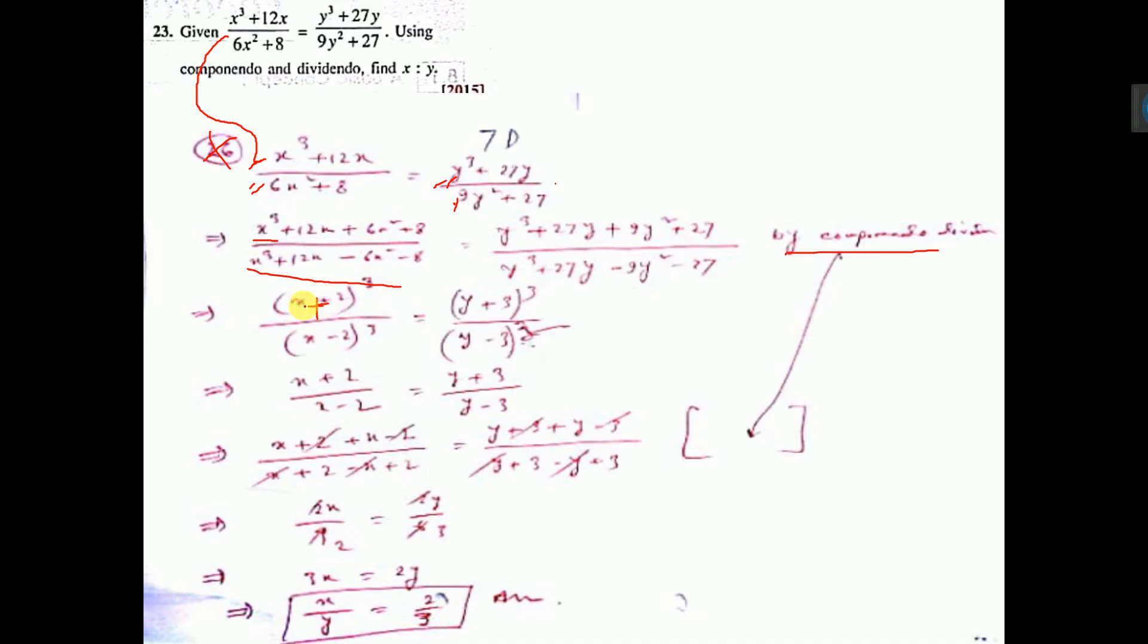If you break down a plus b whole cube: a cube plus 3 a square b plus 3 a b square plus b cube, then you will get this one. Similarly, this one also x minus 2 whole cube. You break down this one: x cube minus 3 x square into 2 plus 3 into x into 2 square plus the last one will be minus 2 cube. You will get this one, that is a plus b whole cube formula, a minus b whole cube formula. You break down, this will come.